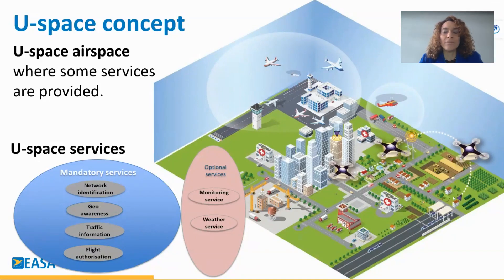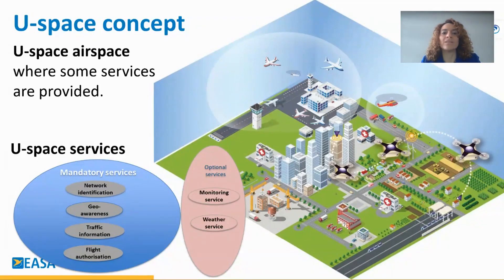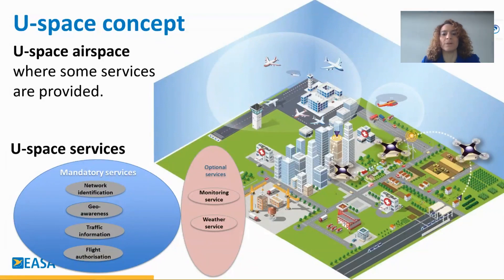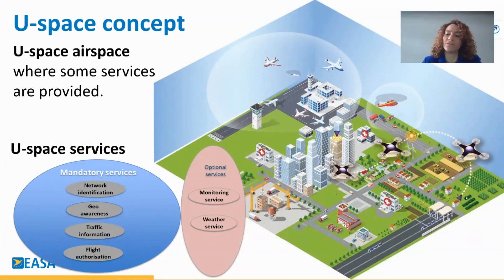The other element of U-Space are the U-Space services. Today we have four mandatory U-Space services: network identification, geo-awareness service, traffic information, and flight authorization service. We also have two optional services, required or not depending on the result of the airspace risk assessment conducted by member states — the conformance monitoring service and the weather information service.